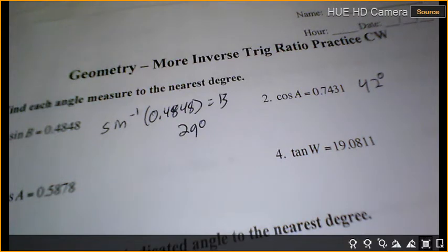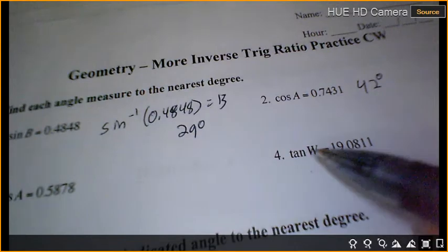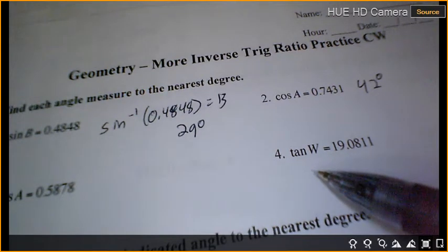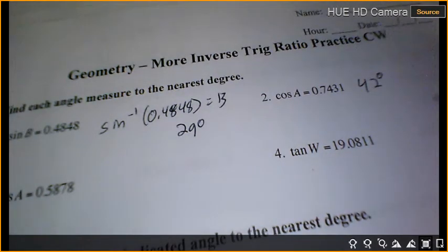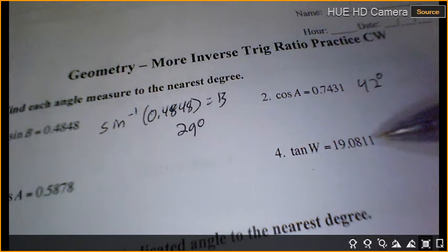So I'm going to go, if I want to find out what W is, what do I put in my calculator? Tan of negative 1, because I'm looking for the angle. And I'm going to put in 19.0811, and I get what? What do you get, guys, when you put inverse tan of 19.0811? 87. 87 degrees.